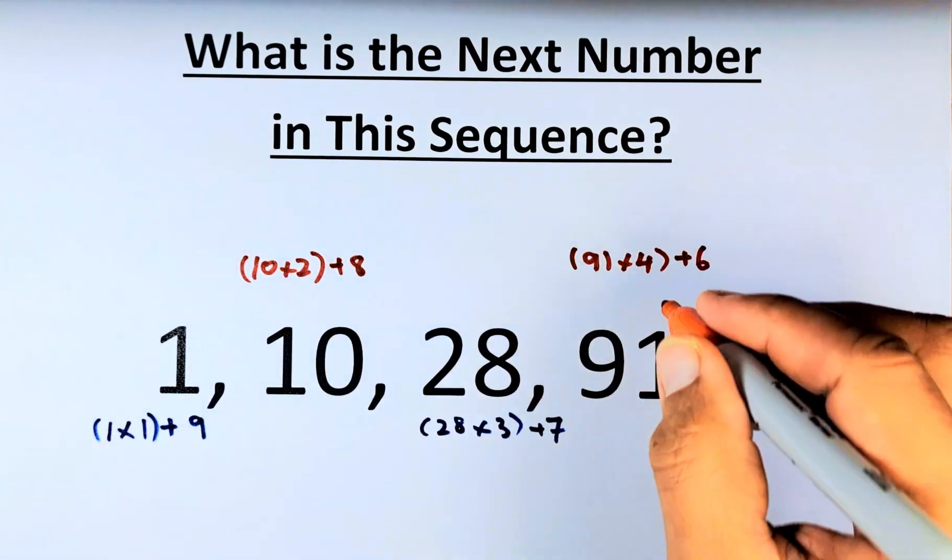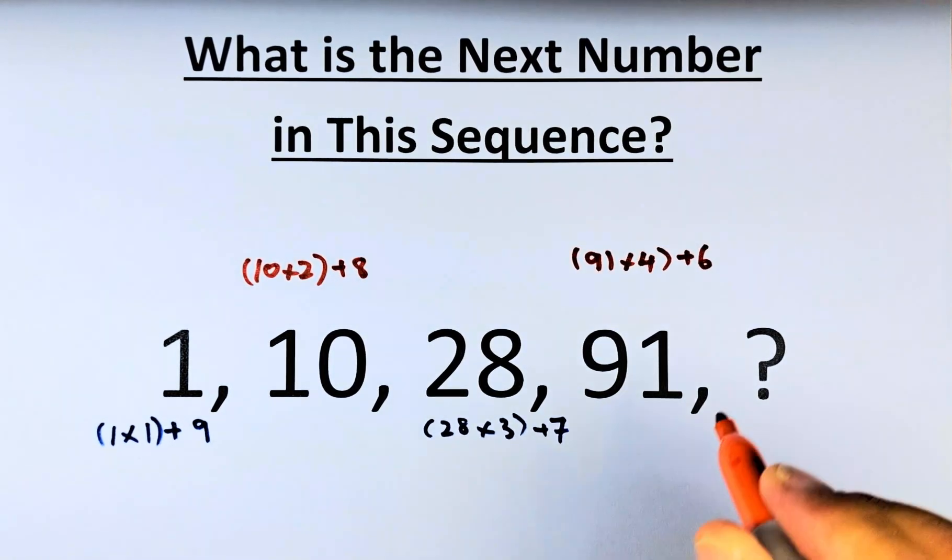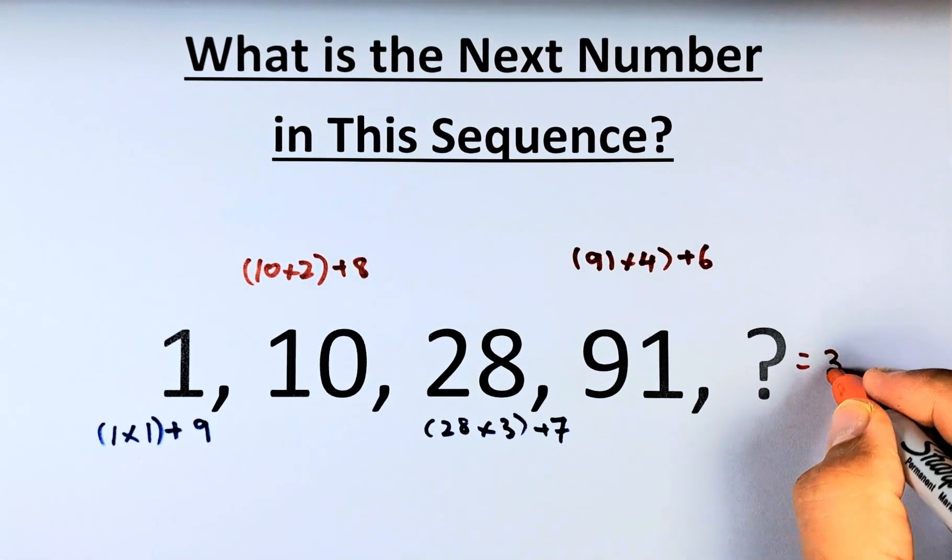We reduce by 1: 9, 8, 7, 6. So 91 times 4 is going to be 364 plus 6, and the answer for the question mark is 370.